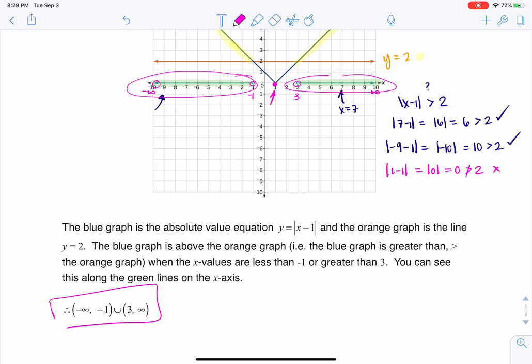So as long as your x value is between negative infinity and negative 1, or it's between 3 and infinity, when you plug that x value into this absolute value inequality, it will be greater than 2. All right. Thanks so much, guys. Bye.